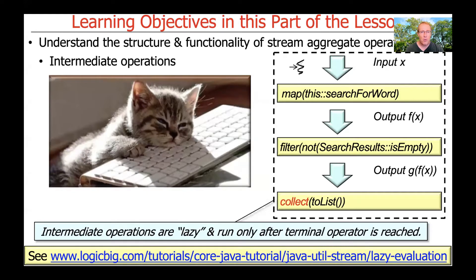Recall that intermediate operations are lazy, and what that means is they don't start to run until the terminal operation is reached. I'll talk a bit more later about how all this works and the data structures that are used internally by Java streams, but that won't happen right away.